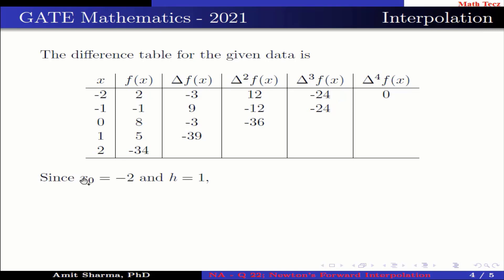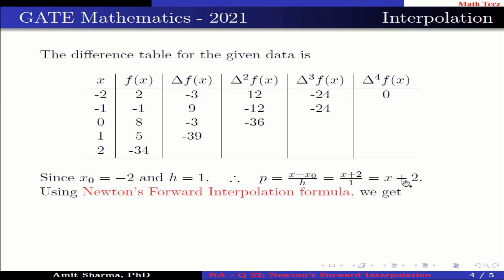Now, since x₀ = -2 and h = 1, therefore p = (x - x₀)/h = (x+2)/1 = x+2.